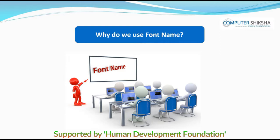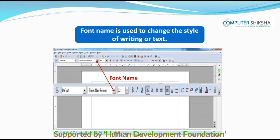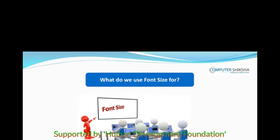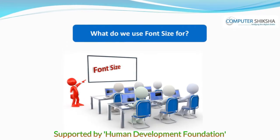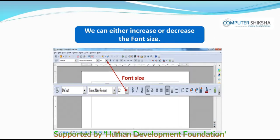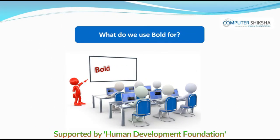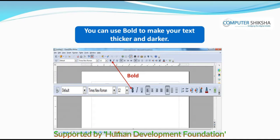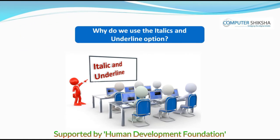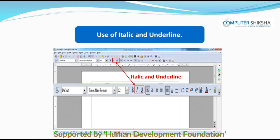Why do we use font name? Font name is used to change the style of writing of your text. What do we use font size for? We can either increase or decrease the font size. What do we use bold for? You can use bold to make your text thicker and darker. Why do we use italics and underline? We use italics to make our text tilted and we use the underline option to get a line below our text.